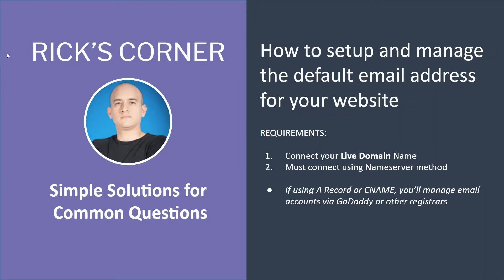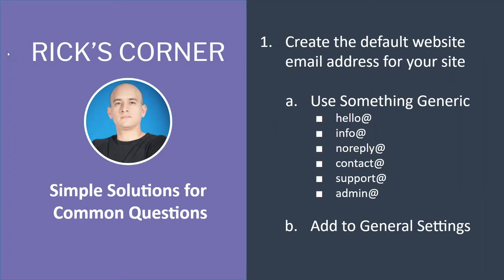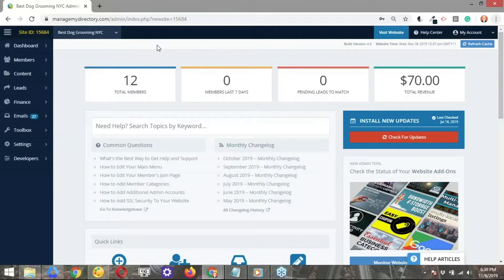Let's dive right into it. We're going to focus initially on creating the default website email, and this is where some common questions come up — people add their default website email before actually creating the email address. So let's go ahead and create the email address first, which is the first item we're going to be doing on the back end of our Best Dog Groomers NYC website. What we're going to be doing right now is creating this email account.